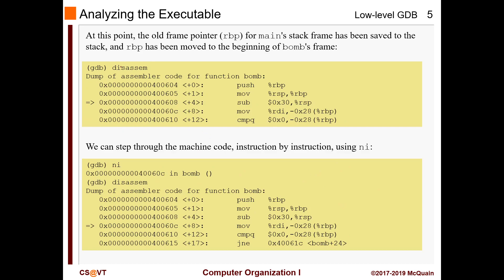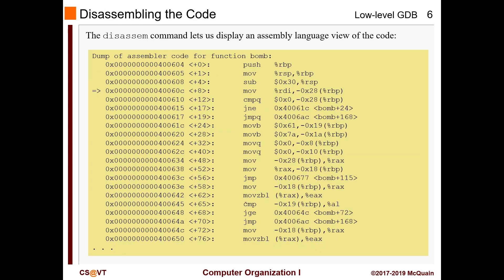After we disassemble we get the assembly version, which should look familiar at this point. We're setting up the stack, putting our parameter value into rbp-28, doing a comparison of rbp-28 against zero. If it's not equal to zero it jumps to bomb+24; otherwise it goes to explode. That's the overall organization of the code.